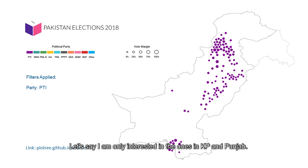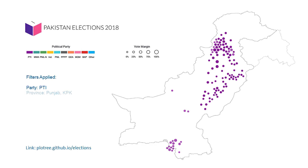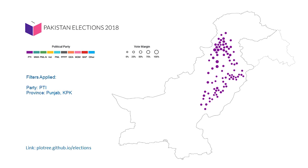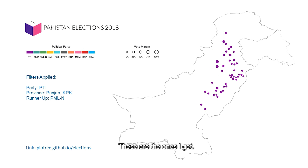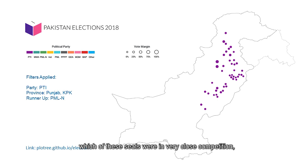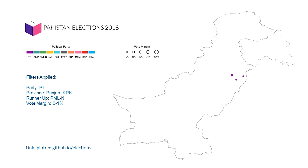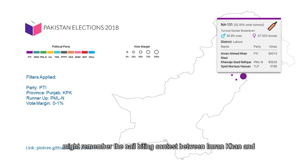Then, let's say I'm only interested in the ones in KP and Punjab — I would get to those seats. Perhaps I could ask which of these seats were in competition with PMLN, and further ask which were in very close competition where the vote margin was less than 1%. I'd filter down to three seats. Those from Lahore might remember the nail-biting contest between Imran Khan and Khaja Sadrafiq in NA-131.